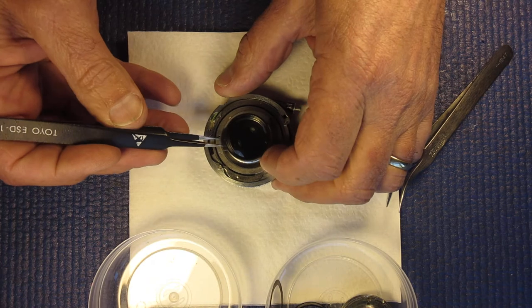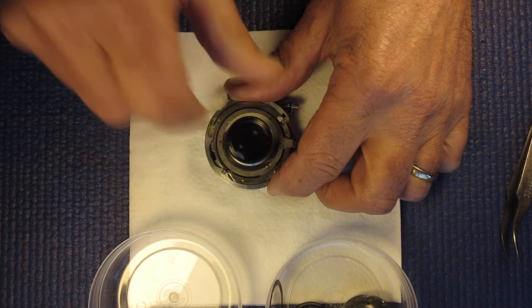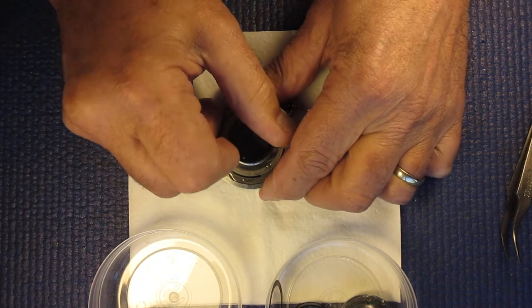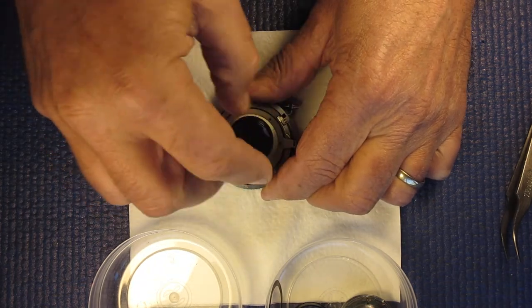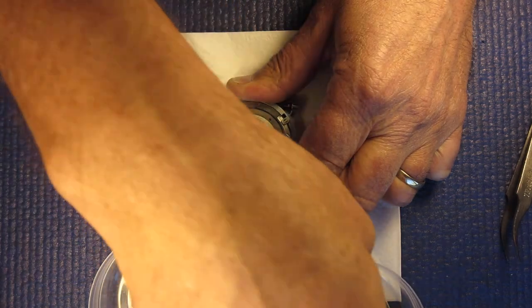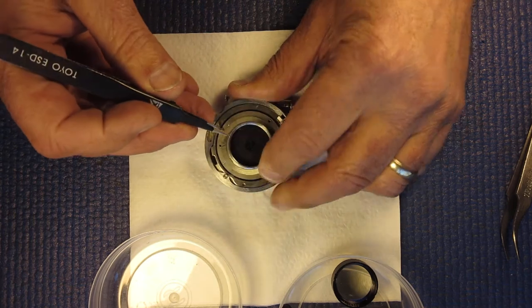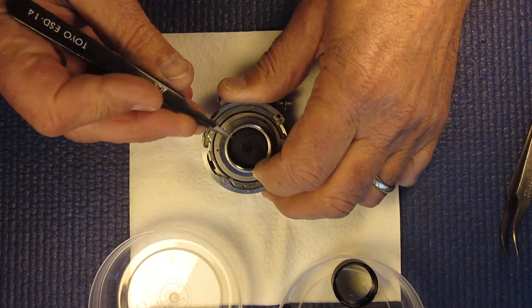That last shim is really reluctant to come off. It's because it's oily and it's just glued down. So I'll remove that lens for better access. That just unscrews. You can do it with your fingers. Let's see if I can get under this shim now. Yeah there it is.